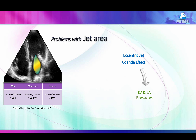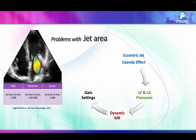Many times the jet size depends upon LV pressure. If LV pressure is high, you get a larger mitral regurgitation jet. If LV pressures are low, as in hypotension, the mitral jet would be small, so your assessment will be wrong. There is also dynamic MR — meaning early versus late systolic regurgitation, such as in mitral valve prolapse, where the jet area may be small early but large in late systole. These are all important caveats.